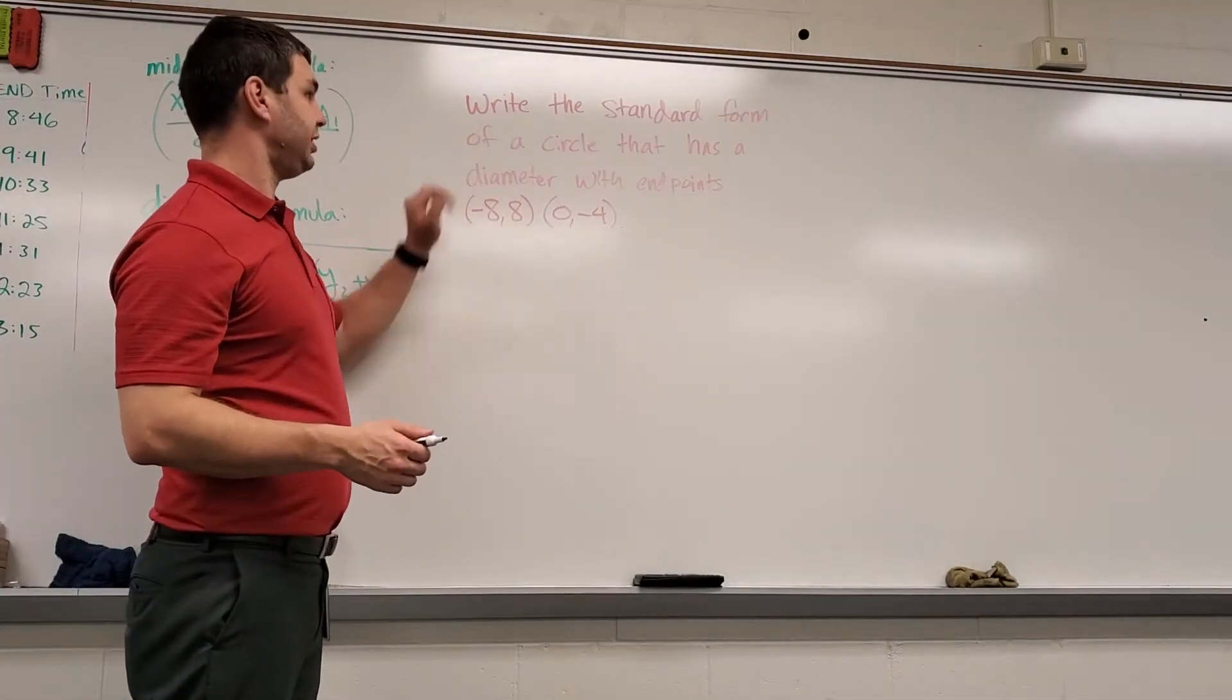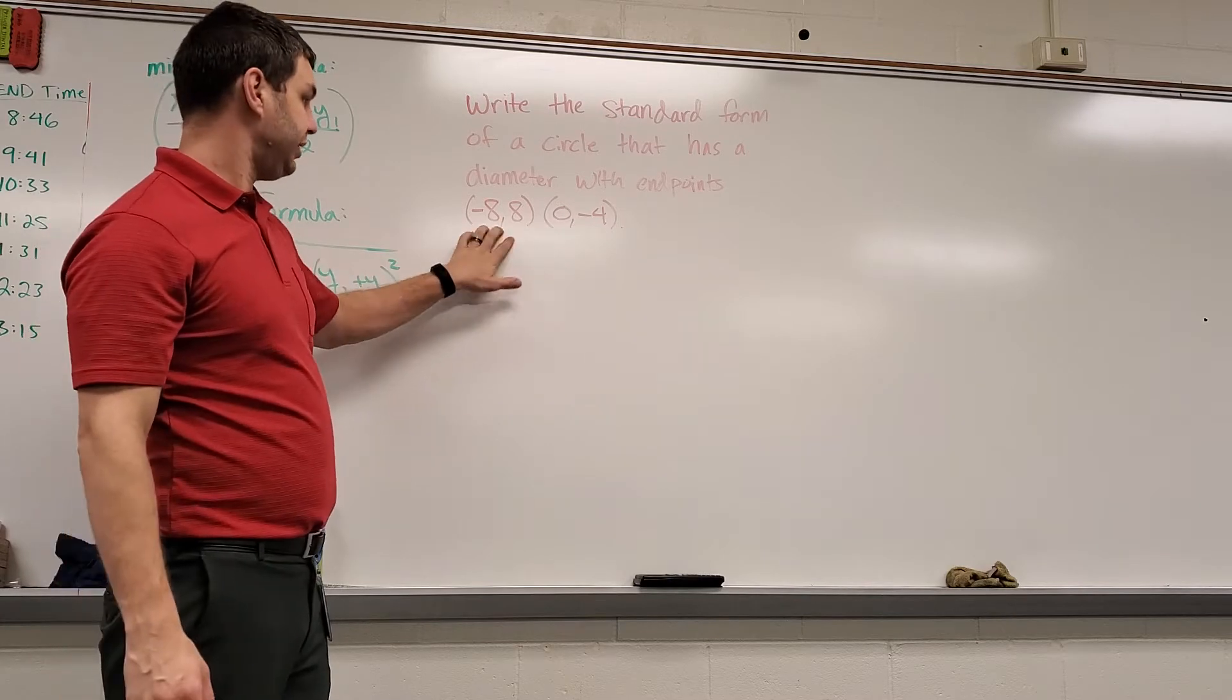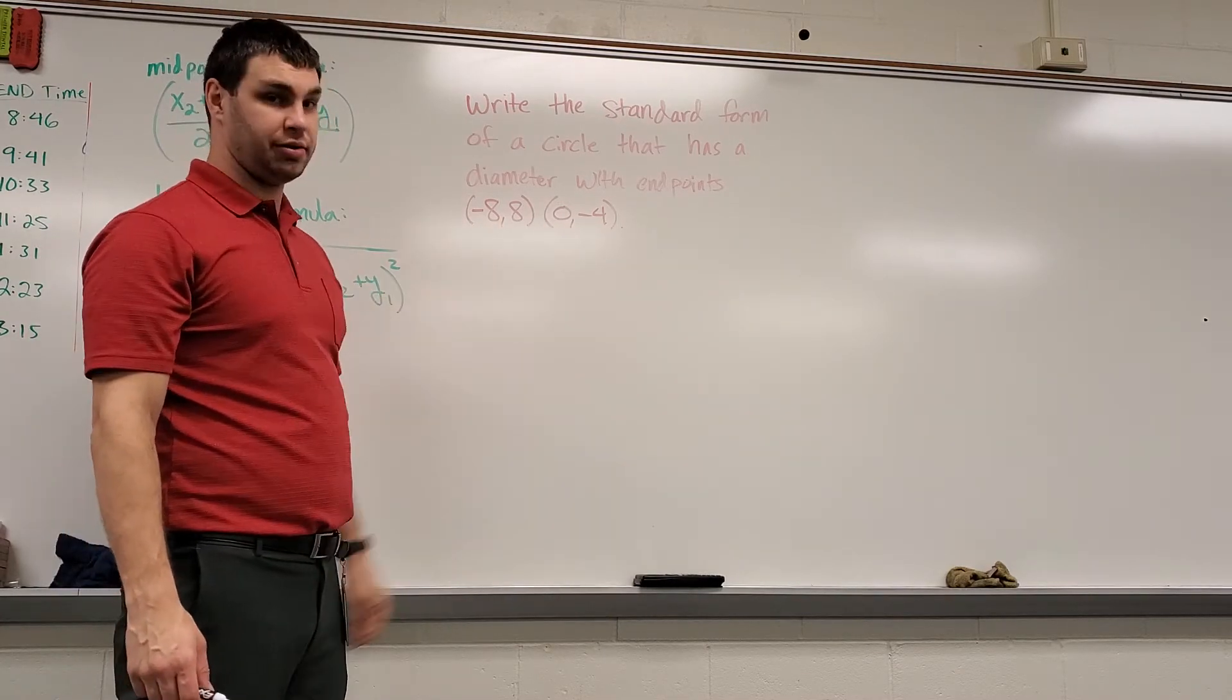Alright guys, this problem says write the standard form of a circle that has a diameter with endpoints negative 8, 8 and 0, negative 4.